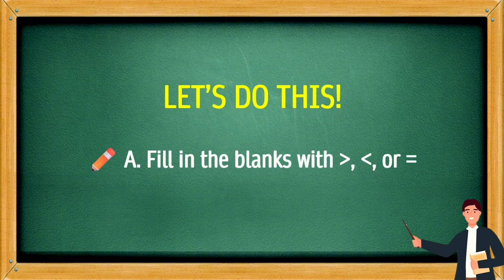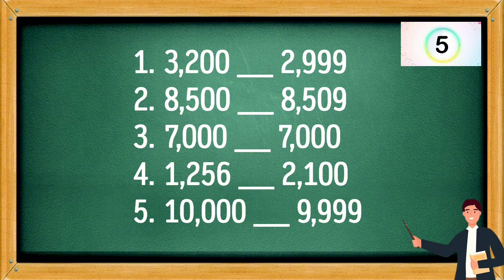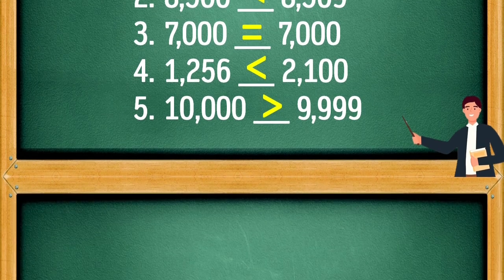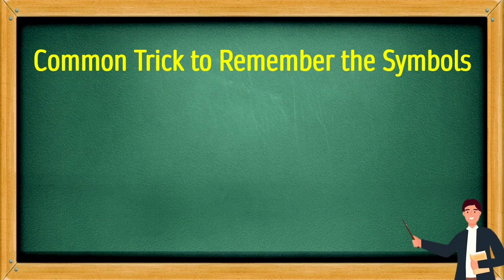Fill in the blanks with greater than, less than, or equal. 3,200 is greater than 2,999. 8,500 is less than 8,509. 7,000 equals 7,000. 1,256 is less than 2,100. 10,000 is greater than 9,999.